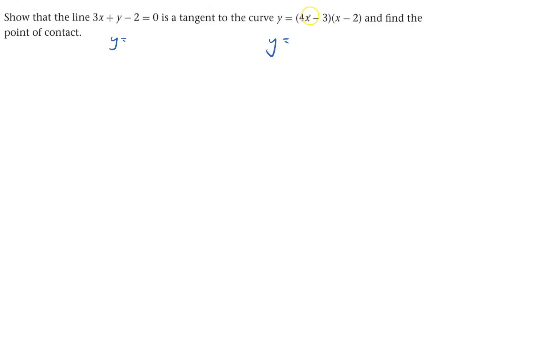So this is 4x squared minus 8x and then minus 3 more x, that's minus 11x, and minus 3 times minus 2 is plus 6.